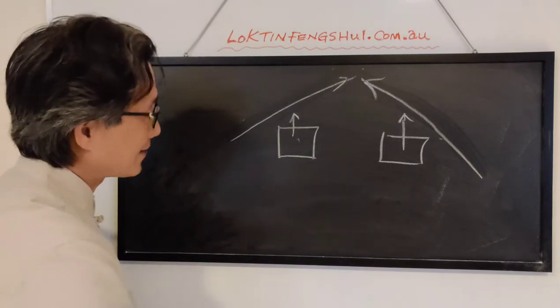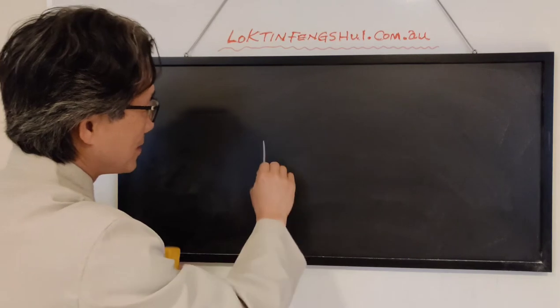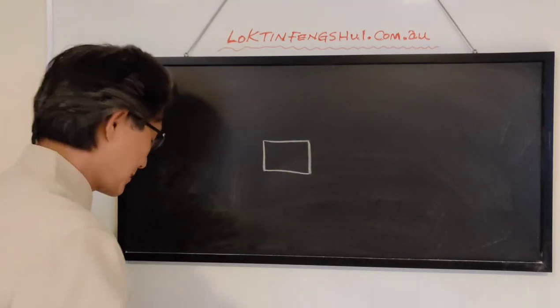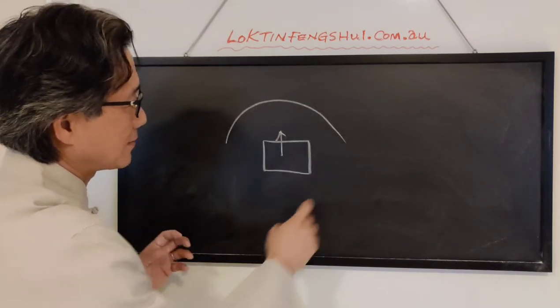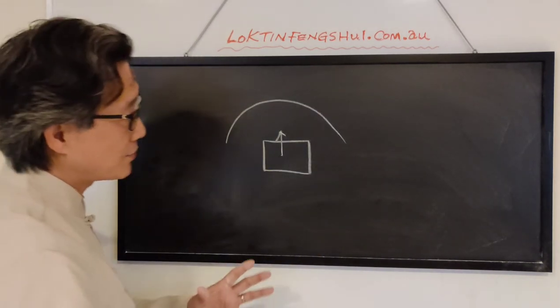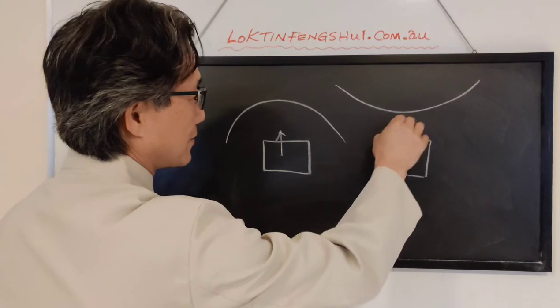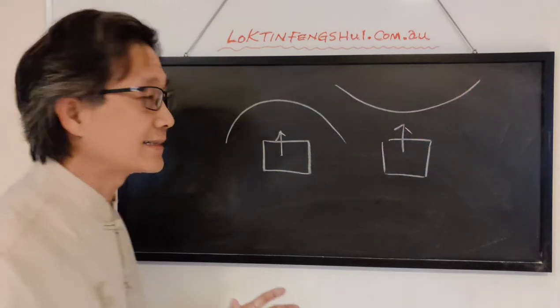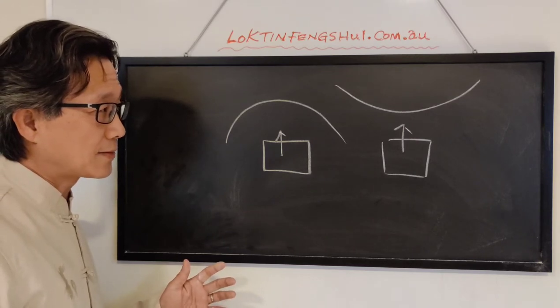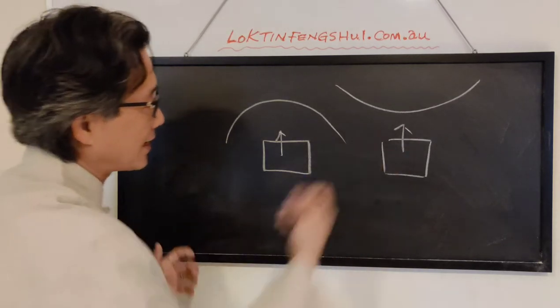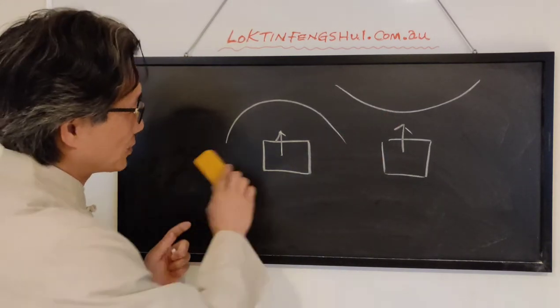Most internet articles say if the road is going that way, right around you, it's very good. But if the road cuts you - like this is a bow, like shooting an arrow to the house - this is no good.